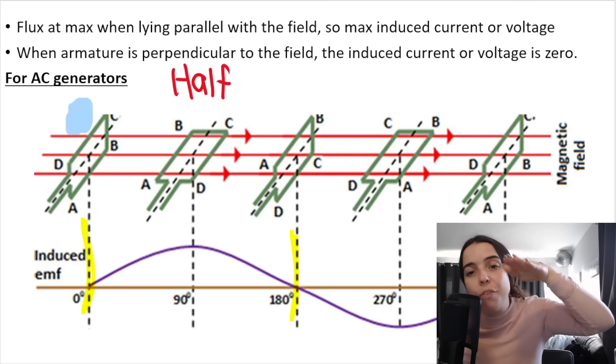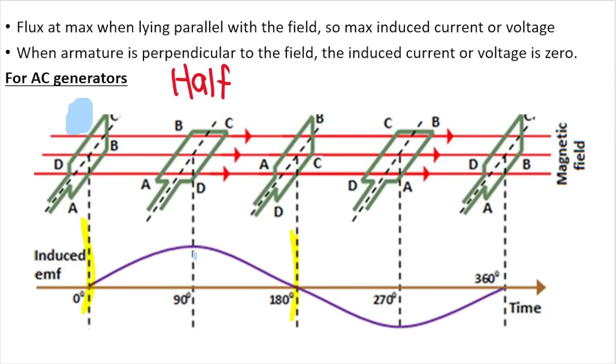parallel with the field, then the voltage is at a maximum. So that would be at this position over here, maximum voltage. Then it rotates back to a vertical position and it's zero and so on. I went through this in a lot more detail in previous videos in this playlist, so go check it out.